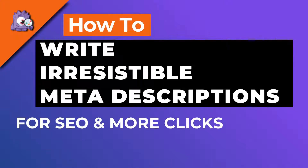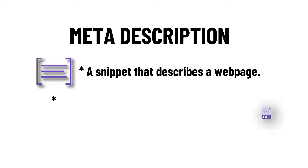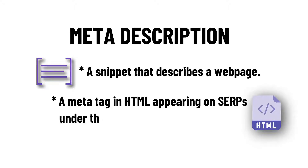In this video, we'll cover how to write irresistible meta-descriptions, telling your readers what to expect from your post, improve your click-through rate, and boost your SEO. A meta-description is a snippet that describes the content of your page. It's a meta tag in HTML, and it appears on search engine result pages under your meta title and URL.